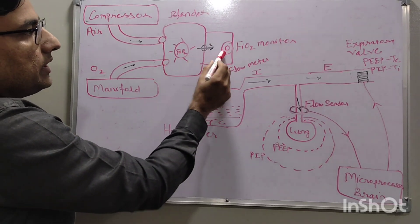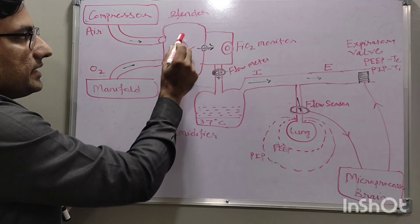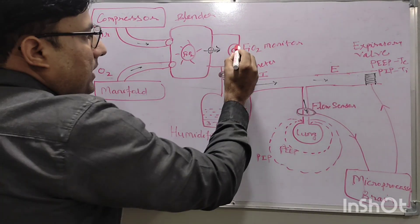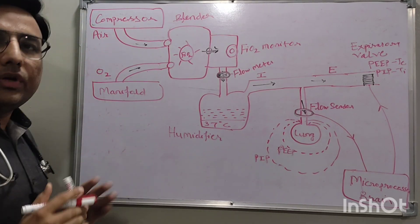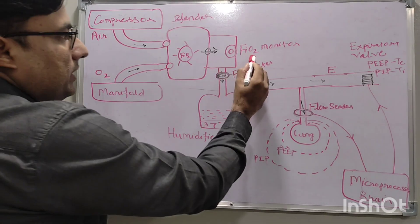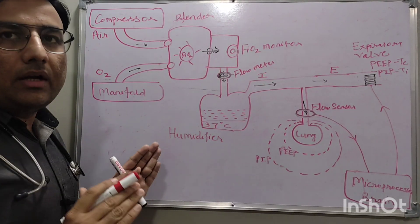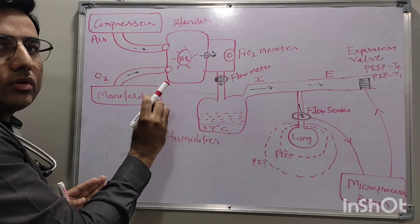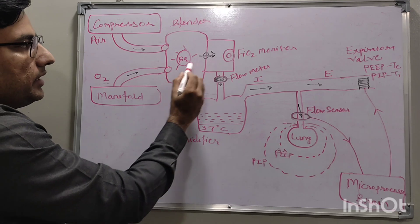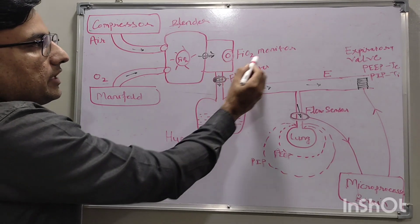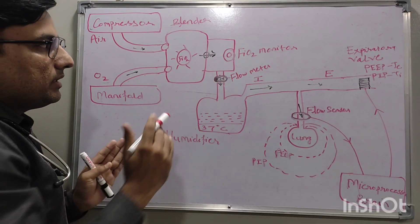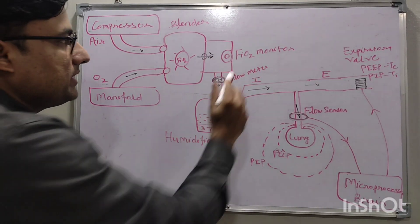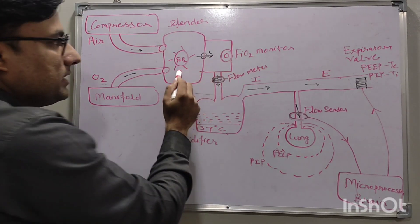We set the required FiO2 and the blender mixes the proportion of air and oxygen accordingly. That mixed air goes to the low pressure chamber — first going through the high pressure chamber and then the low pressure chamber. After that there is an FiO2 monitor that measures the delivered FiO2 — the blender is mixing air and oxygen to give the required FiO2, and this FiO2 monitor verifies that what we have set is actually being delivered. So this is the measured FiO2 and this is the set FiO2.